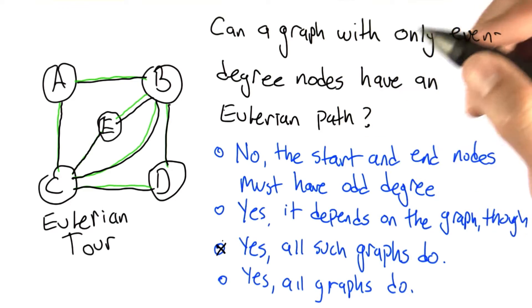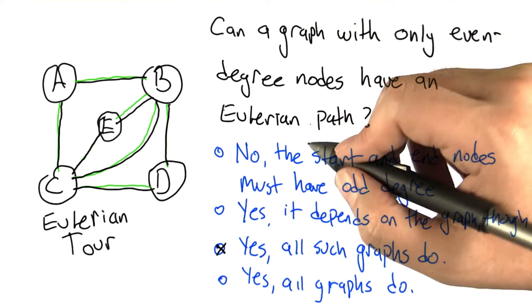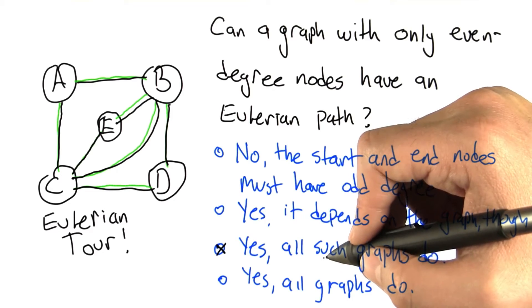All such graphs do. All graphs that have only even degree nodes do have Eulerian paths, specifically Eulerian tours. But it's not the case that all graphs do.